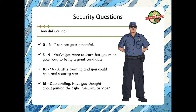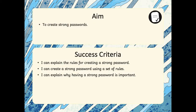How did you do? If you have 0 to 4, we can see your potential. If you have 5 to 9, you've got a little more to learn but you're on your way to becoming a great candidate. 10 to 14 — a little training and you could be a real security star. And if you've got 15 — outstanding — have you thought about joining a cyber security service? Hopefully, after this video, we've met our aim to create strong passwords and completed all three things on our success criteria. You can explain the rules for creating a strong password, create one using a set of rules, and explain why having a strong password is important. I will see you tomorrow at 7:40 for another virtual school lesson.